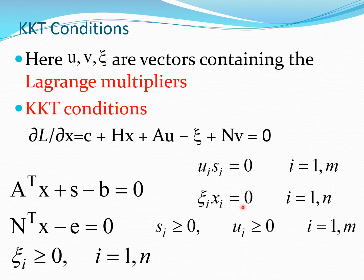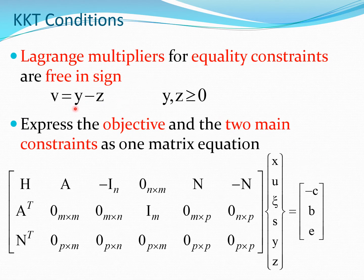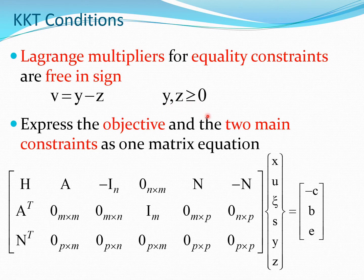The slack variable is greater than or equal to zero and the Lagrange multiplier U is greater than or equal to zero. However, the Lagrange multiplier V is free in sign. Because the Lagrange multiplier for equality constraints is free in sign, we split it into two variables: V equals Y minus Z, where both Y and Z are greater than or equal to zero. This is the form we used in the LP parts of the course — a free variable expressed as the difference of two positive variables.